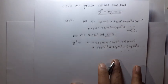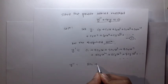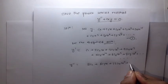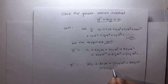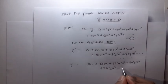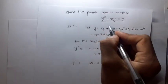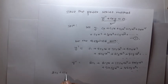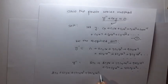Again differentiating, y double dash is equal to 2c2 plus 6c3x plus 12c4x squared plus 20c5x cubed plus 30c6x to the 4th plus 42c7x to the 5th plus dot dot dot.